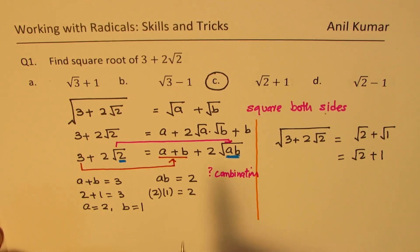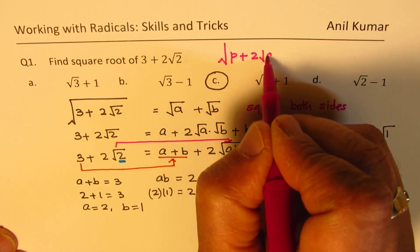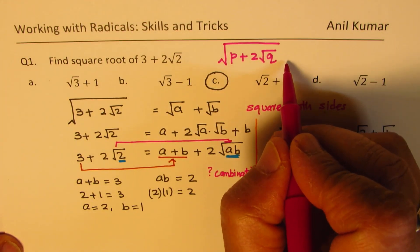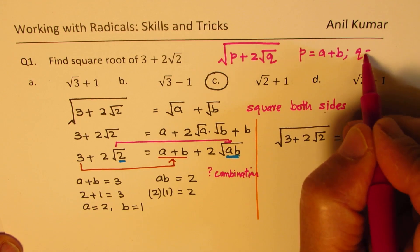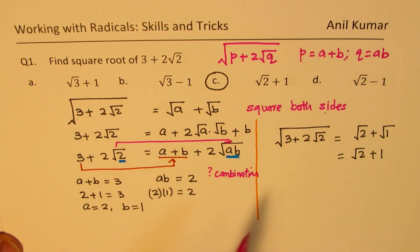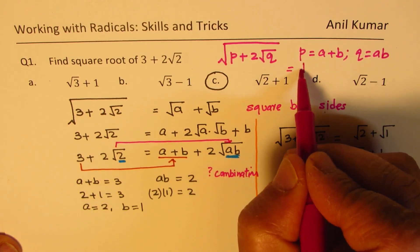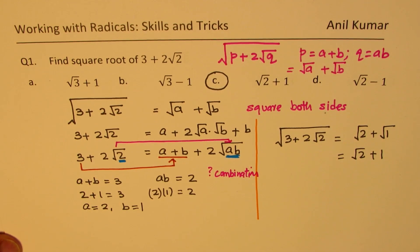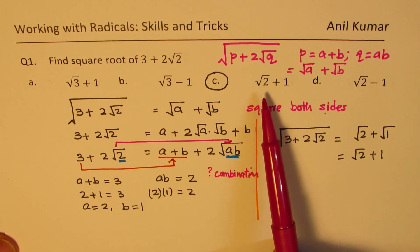In this method we understood one key thing: if we have to find the square root of p plus 2 times square root of q, then p equals a plus b and q equals ab. We can write the result as square root of a plus square root of b when the middle term is positive. This is the strategy we can use to get answers within seconds.